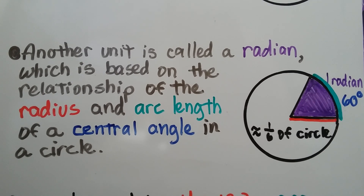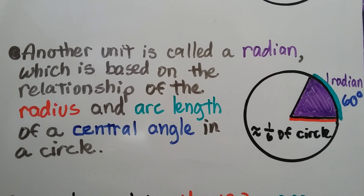Another unit is called a radian, which is based on the relationship of the radius and arc length of a central angle in a circle. Here we have one radian in the purple area. It's approximately 60 degrees, and it's equivalent to approximately 1/6 of a circle.